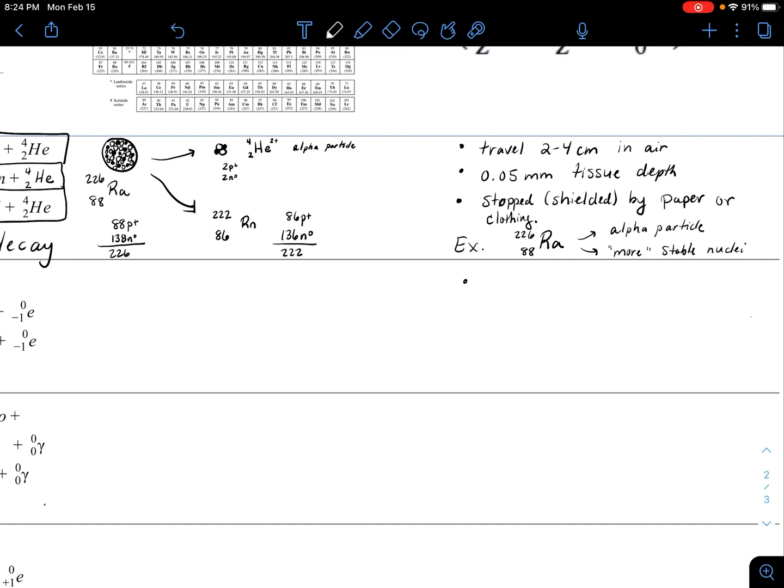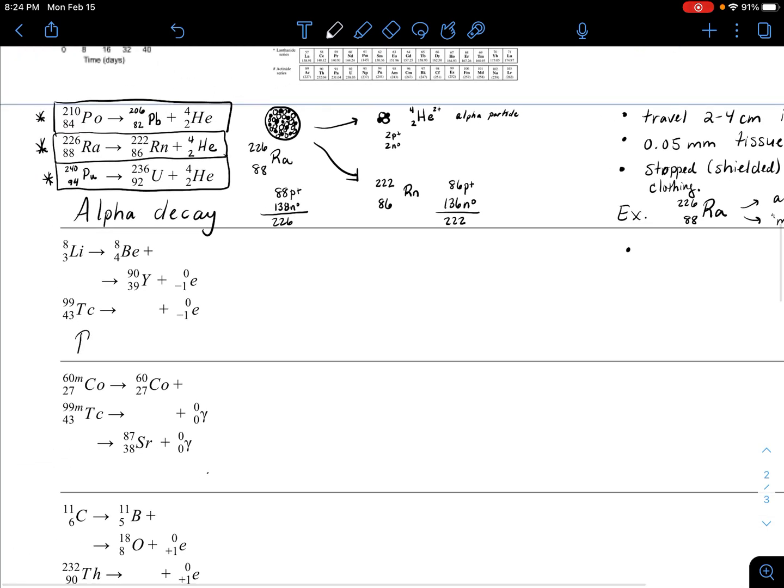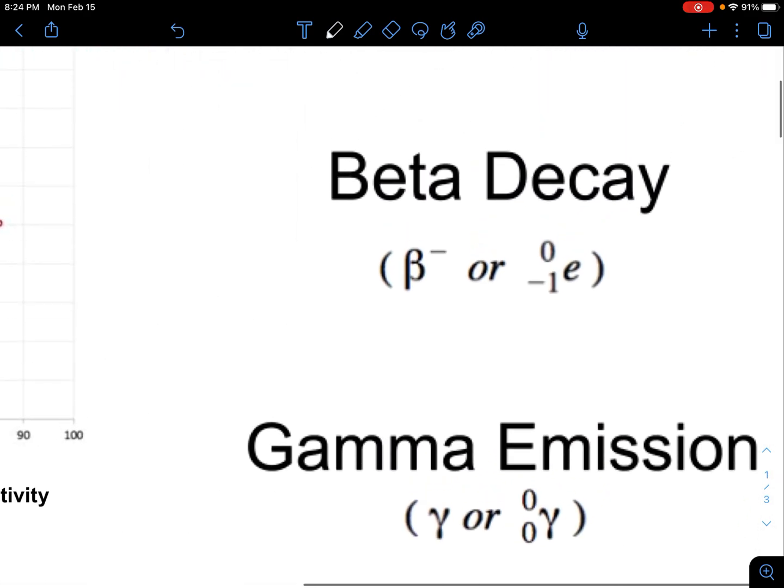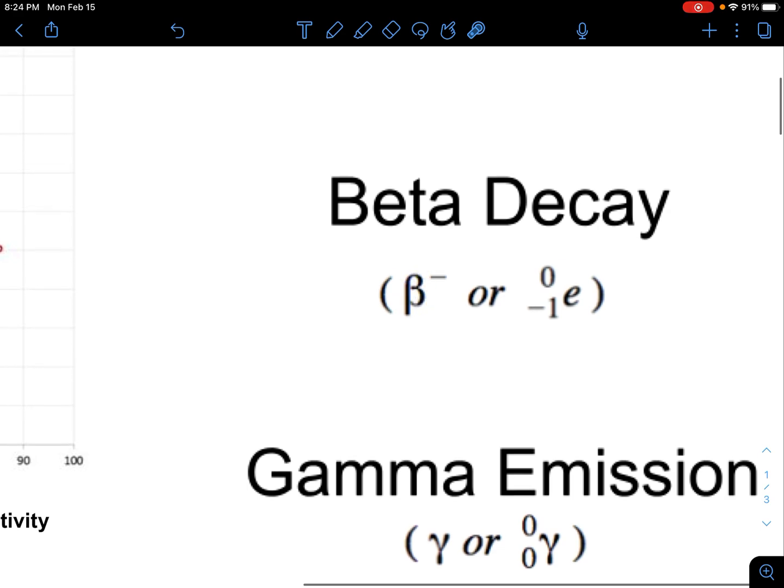Beta decay is kind of like a fast-moving electron. If you look at the symbol, it's given the symbol beta, but it's got no protons, no neutrons, so the atomic number can't be anything. They put a negative one because it's just a fast-moving electron.